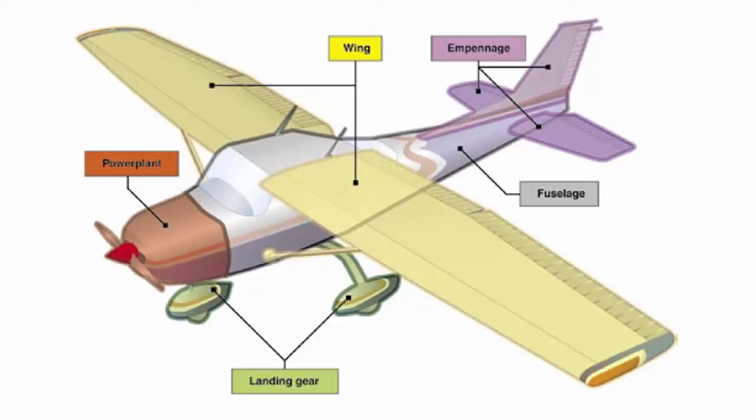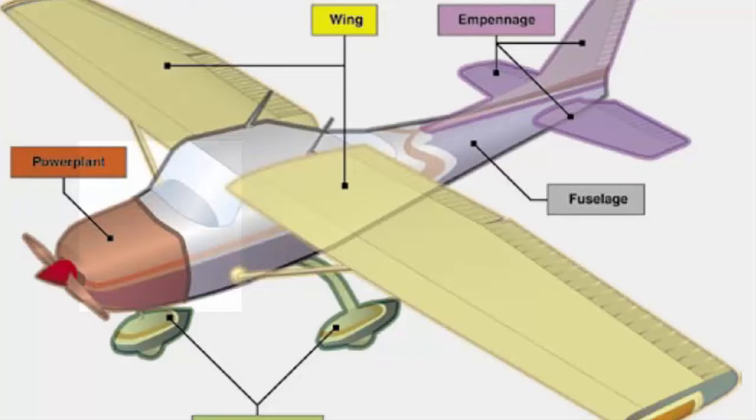In this video, we'll look at the major components of an aircraft. Although airplanes are designed for a variety of purposes, nearly all of them have the same major components. These common airplane structural components include the fuselage, wings, an empennage, landing gear, and a power plant.